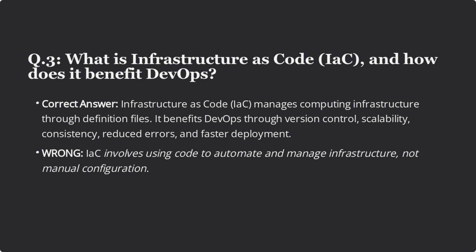The correct answer is infrastructure as code (IaC) manages computing infrastructure through definition files. It benefits DevOps through version control, scalability, consistency, reduced errors, and faster deployment. A common mistake: IaC involves using code to automate and manage infrastructure, not manual configuration.